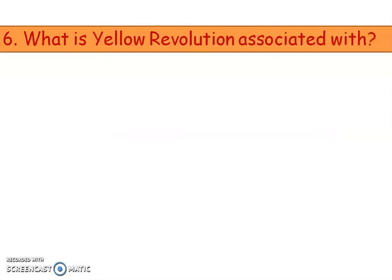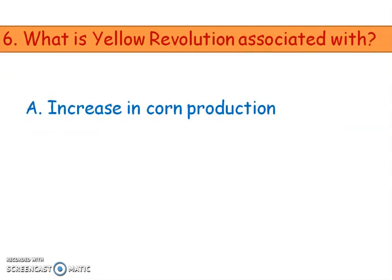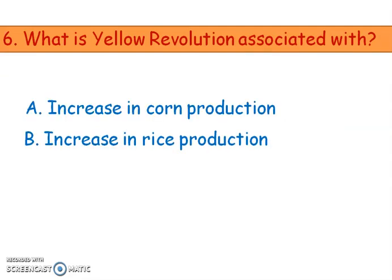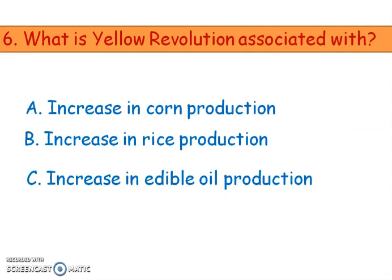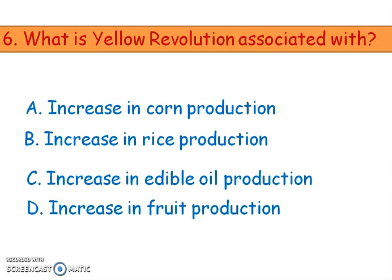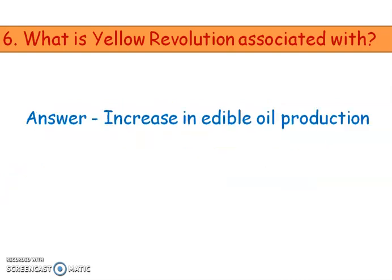Next question: what is the Yellow Revolution associated with? Options are increase in corn production, increase in rice production, increase in edible oil production, and increase in food production. The right answer is option C, increase in edible oil production — particularly mustard oil.